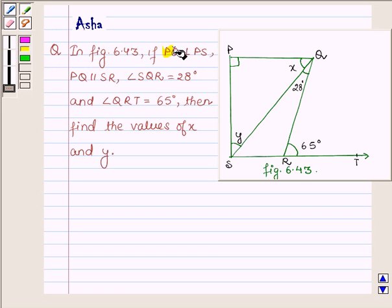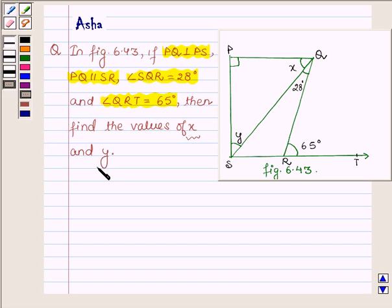if PQ is perpendicular to PS, PQ is parallel to SR, and angle SQR is equal to 28 degrees and angle QRT is equal to 65 degrees, then find the values of x and y.